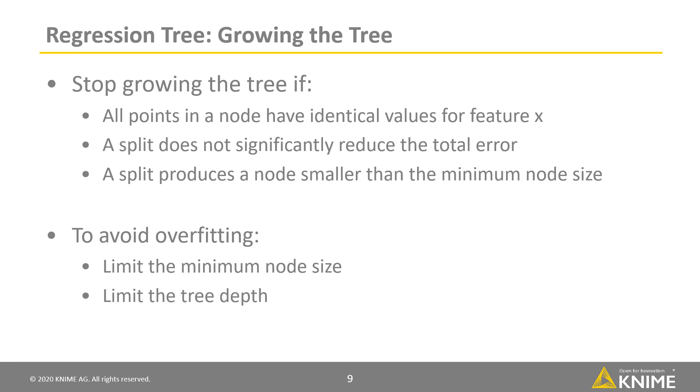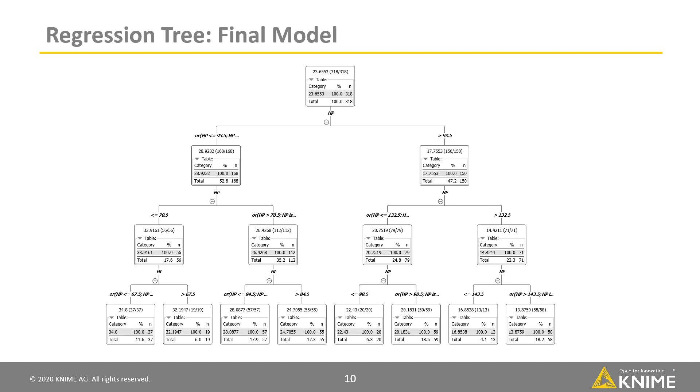Limiting the minimum node size and the tree depth is important in order to avoid overfitting. Here is the resulting tree from our example earlier. This tree was generated by the simple regression tree learner node in KNIME Analytics Platform.